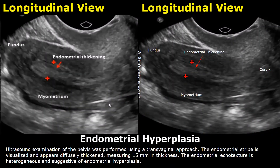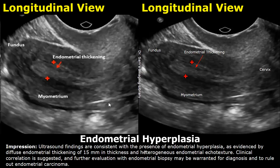This is an example report of endometrial hyperplasia. After writing the approach, you can write the measurement of the endometrium. Then write about the echo texture of the endometrium, whether it is heterogeneous or homogeneous. In the impression, you can mention endometrial hyperplasia as evidenced by diffuse endometrial thickening, then write the measurement, the appearance of the endometrial echo texture, and finally write about clinical correlation.